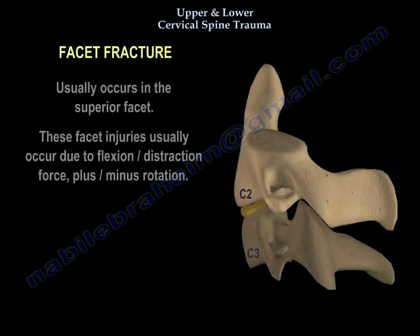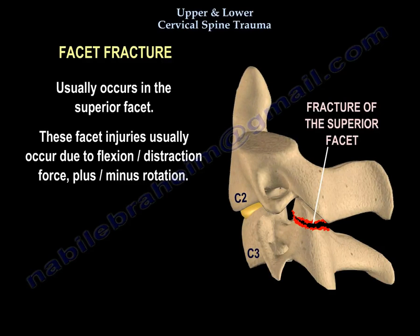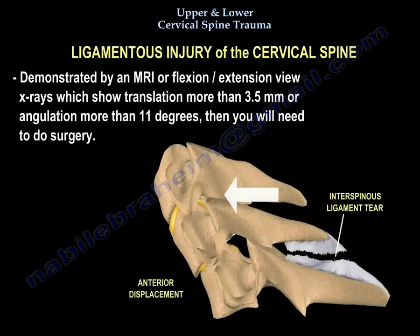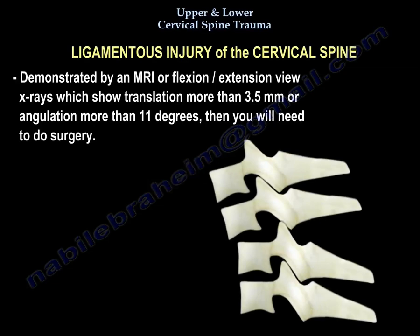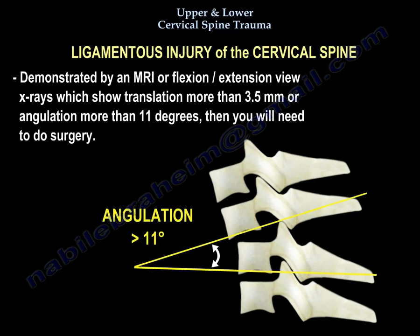You can also have a facet fracture, usually the superior facet. These facet injuries usually occur from flexion-distraction force, plus or minus rotation. Another entity is ligamentous injury of the spine, which you demonstrate by MRI or by flexion-extension views showing translation more than 3.5 mm or angulation more than 11 degrees — then you need to do surgery.